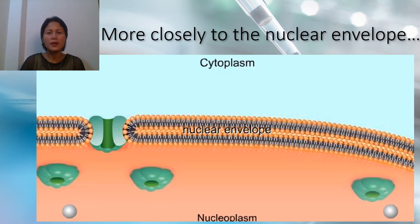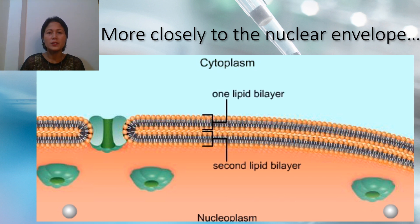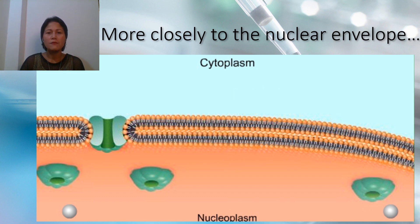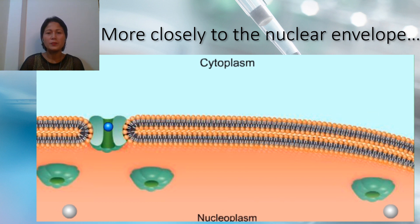More closely, looking at the nuclear envelope: it controls the passage of substances between the interior of the nucleus and the cytoplasm. The nuclear envelope consists of two lipid bilayers — the outer bilayer faces the cytoplasm, while the inner one faces the nucleoplasm. Nuclear pores span the envelope. Each pore is an organized array of membrane proteins, where ions and small diameter molecules move passively through the pores. Large molecules, such as ribosomal units, are moved in more controlled ways.